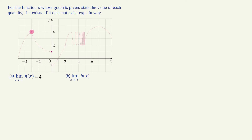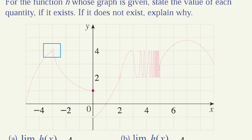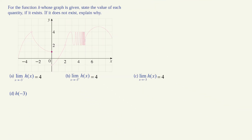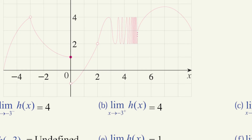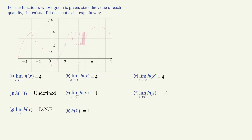From the right side, again the function approaches 4. The limit as x approaches negative 3 — since the function approaches 4 from both sides, this answer is also 4. The value of the function at x equals negative 3? This open circle tells us that the function is undefined at x equals negative 3. As x approaches 0 from the left side, y approaches 1; from the right side, y approaches negative 1. Since the left-hand and right-hand limits are not equal at x equals 0, the limit of h as x approaches 0 does not exist. The value of the function at x equals 0 is 1 — the filled-in solid circle tells us that. A ring shows absence of a value and a solid circle shows presence of a value.